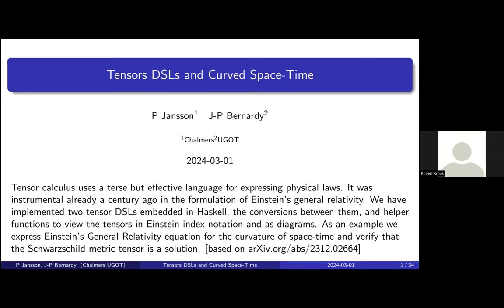Tensor calculus is what Einstein learned from mathematician friends for expressing certain kinds of differential calculus, useful for writing down the curvature of spacetime equations about 100 years ago — the relativity things. We've tried to implement some DSLs in Haskell — domain-specific languages — to keep track of the types and also to help with presenting these things, because the notation is rather terse. You might want a clearer presentation but also want to be able to present the graphical view.